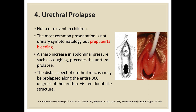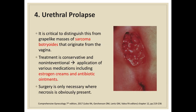Although rare, urethral prolapse does occur in children. The most common presentation is prepubertal bleeding rather than a urinary symptom, usually preceded by a sharp increase in abdominal pressure such as coughing. The distal aspect of the urethral mucosa may prolapse along the entire 360 degrees of the urethra, producing a red donut-like structure. It is critical to distinguish urethral prolapse from grape-like masses of sarcoma botryoides originating from the vagina. Treatment is conservative—estrogen creams and antibiotic ointments—and surgery is only necessary where necrosis is obviously present.